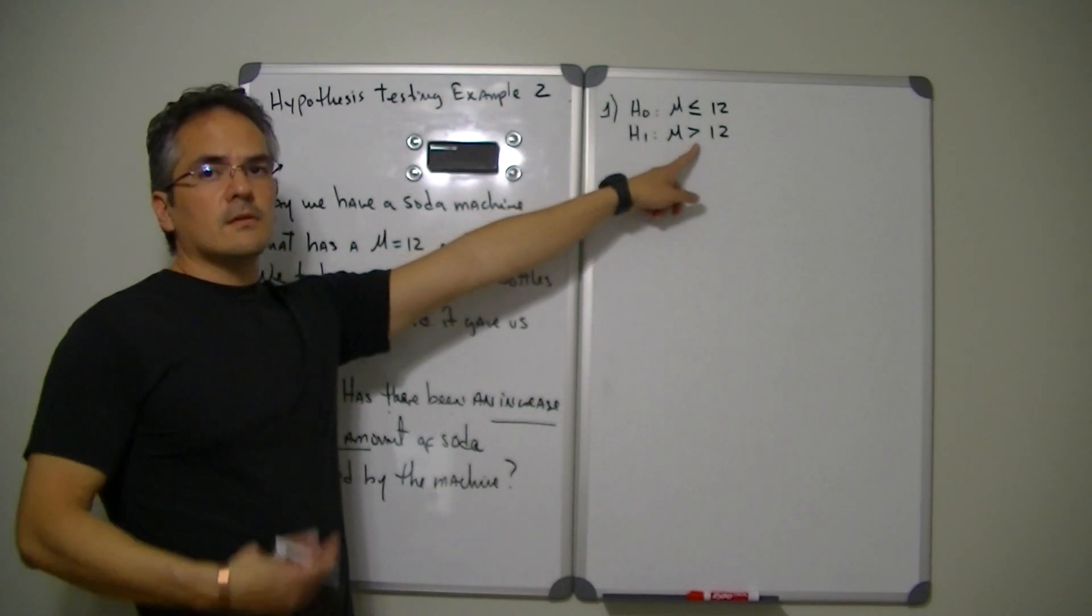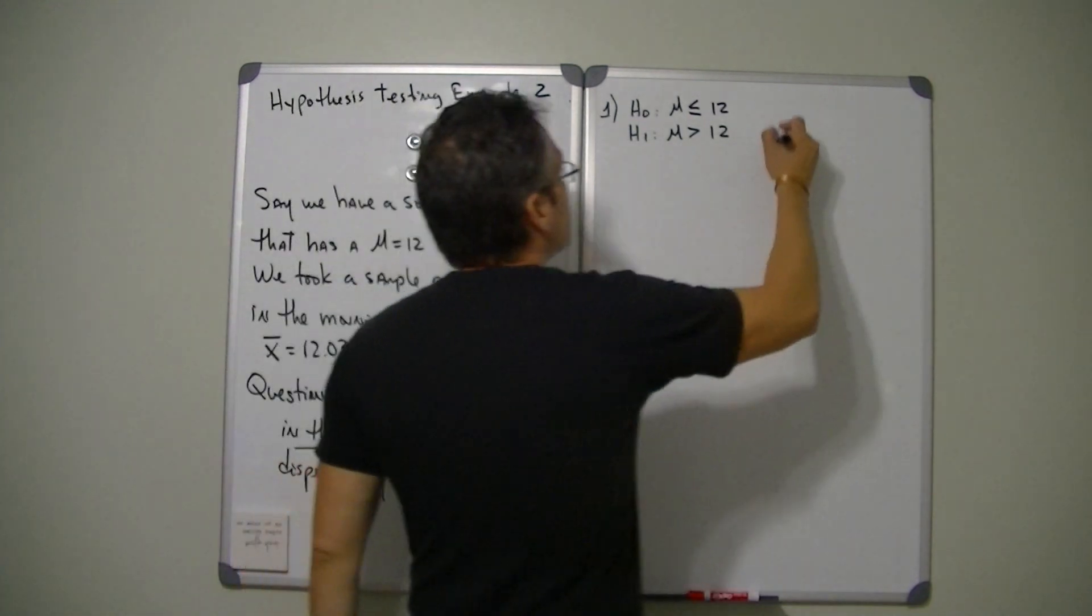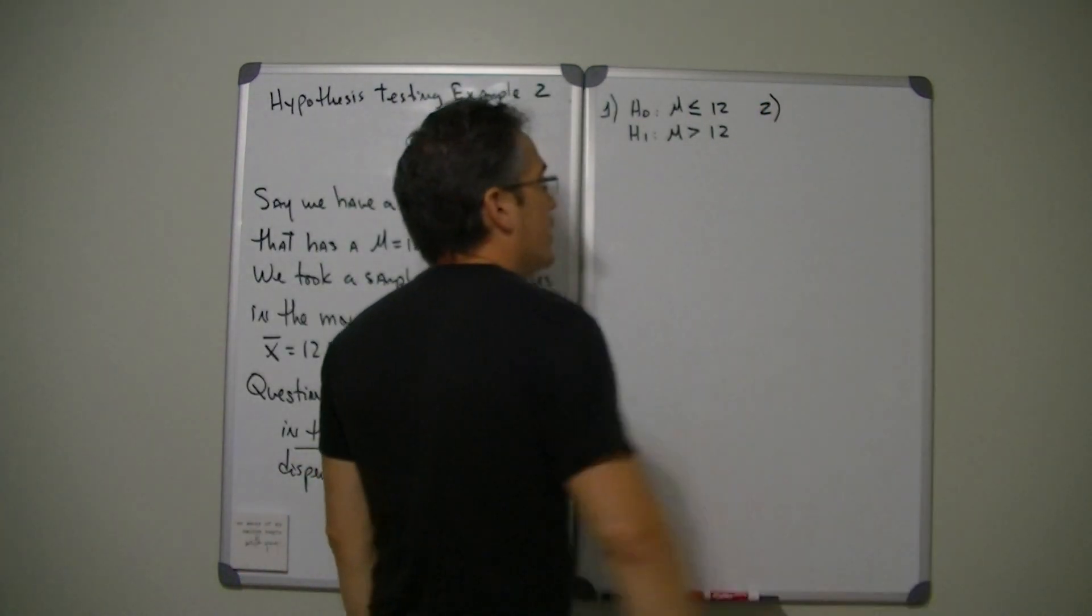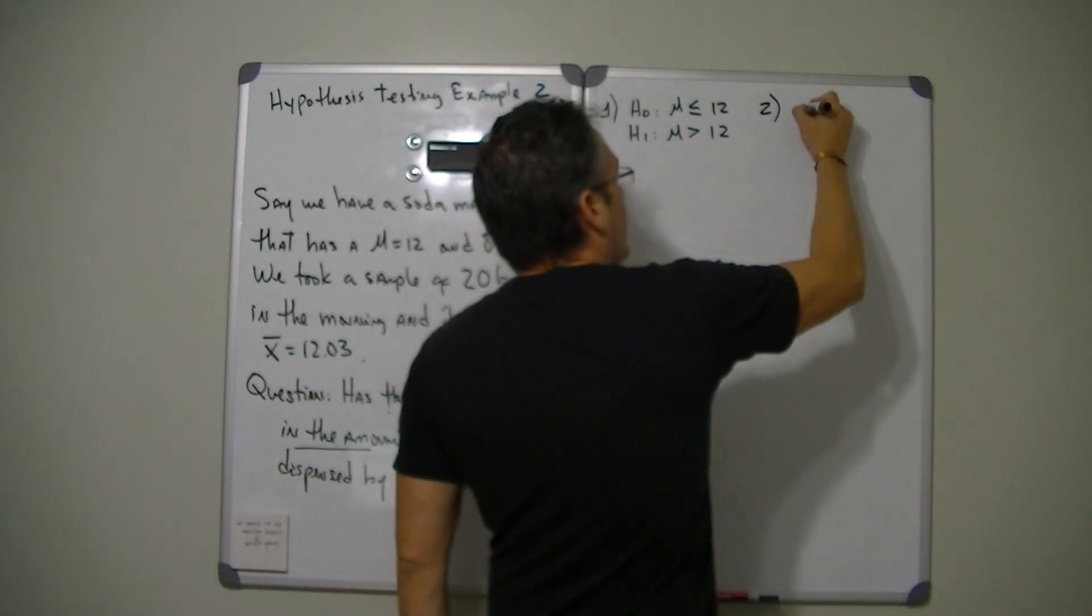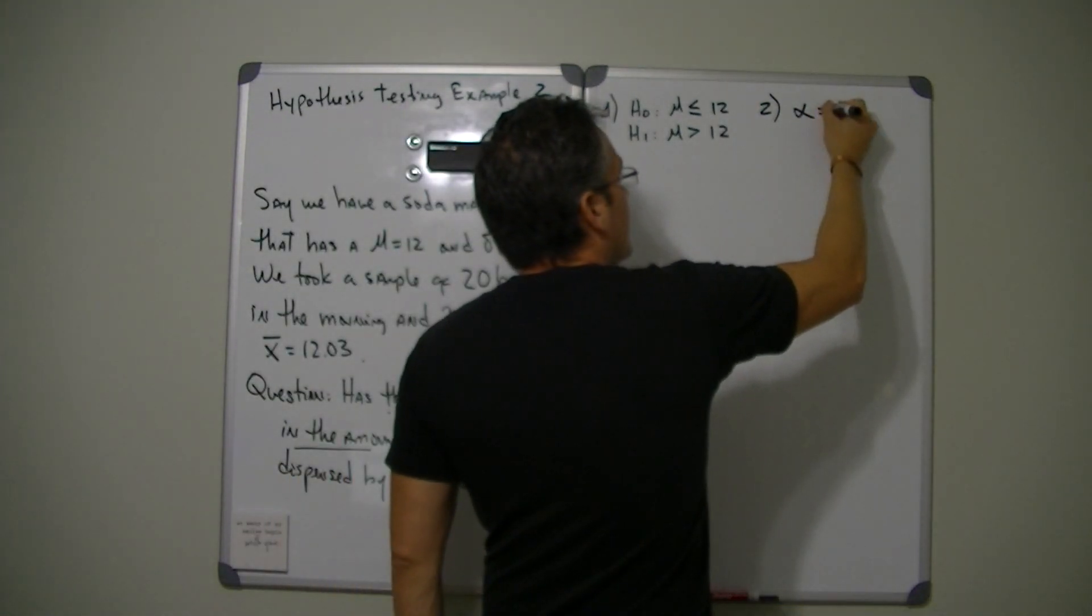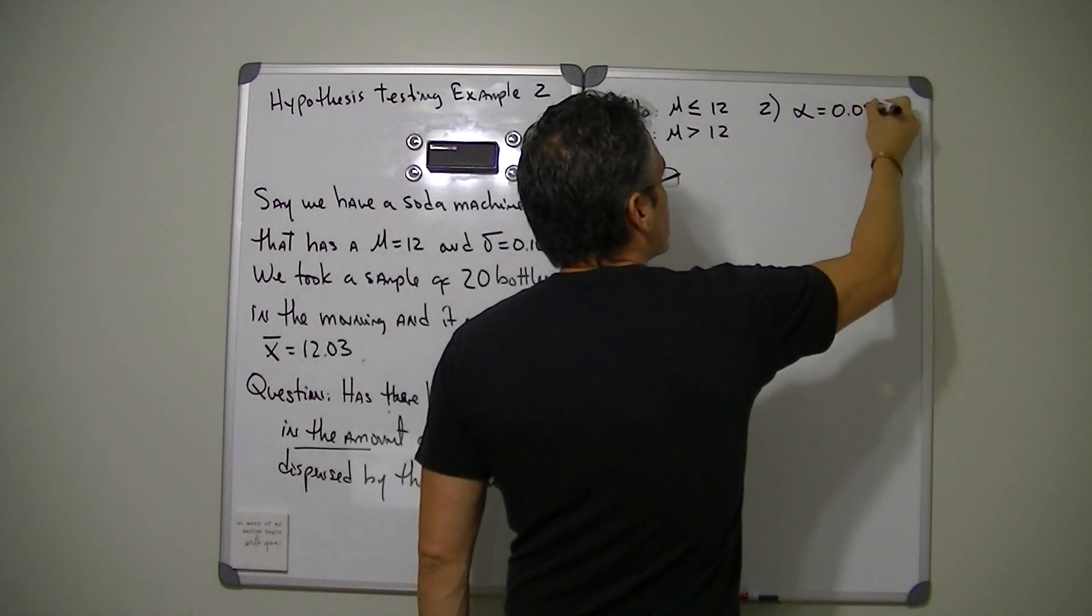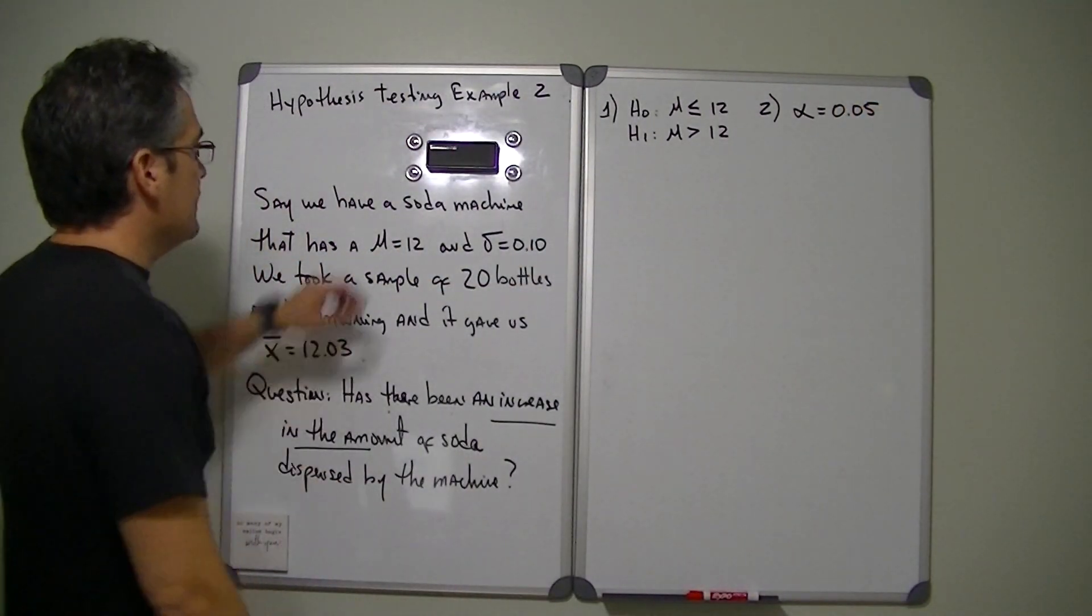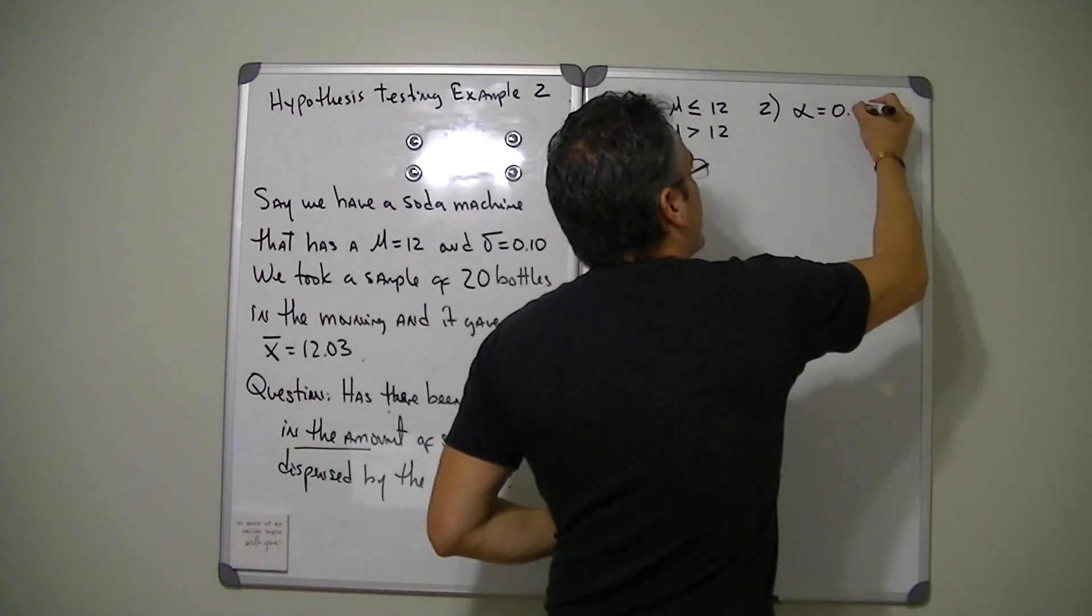For step number two, we need to find our alpha or level of significance. Now let's say that we're going to use 0.05. Actually let's change it because last time we used 0.05 as well. Let's use 0.10.